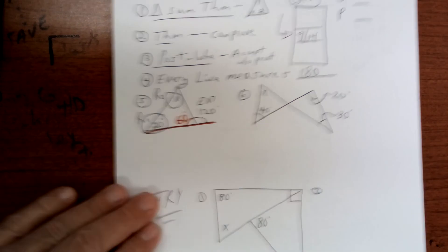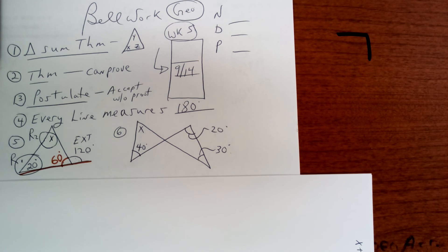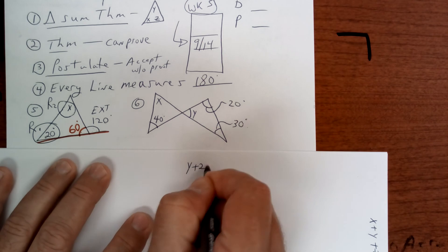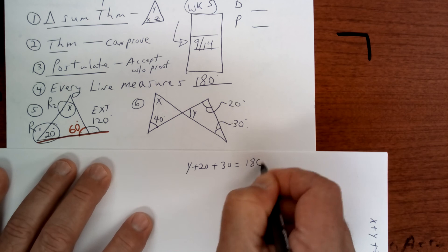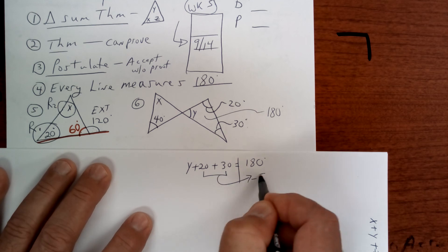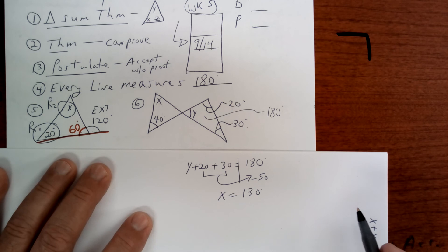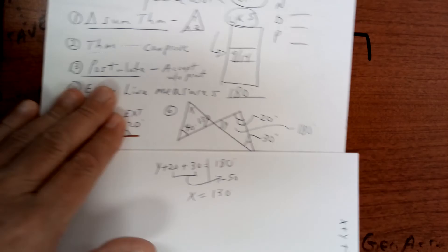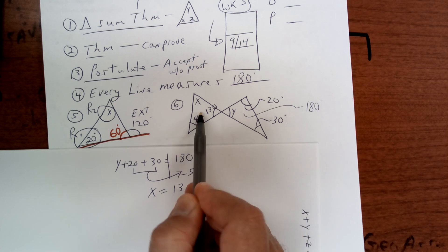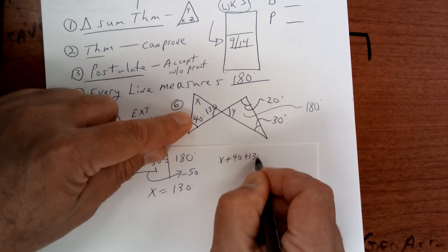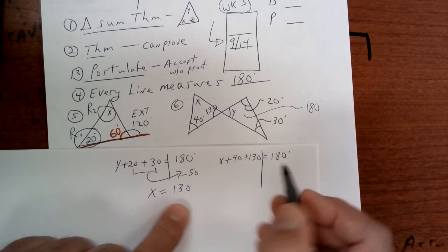The way you transition from this triangle to that triangle is you first have to find this angle — put a y right here, and I want to see your equations today. So put y plus 20 plus 30 equals 180 degrees, which is a triangle. This is 50, so subtract 50 and get x equals 130 degrees. By vertical angles, this one is also 130 degrees, so now you write a second equation: x plus 40 plus 130 equals 180 degrees.